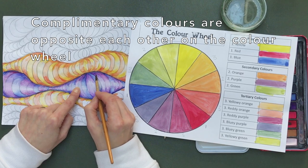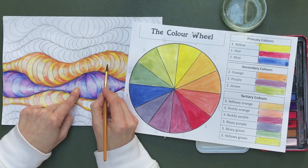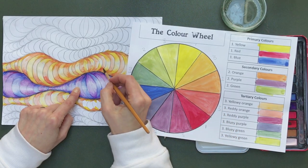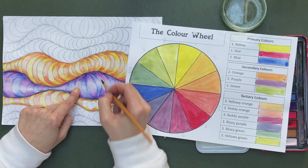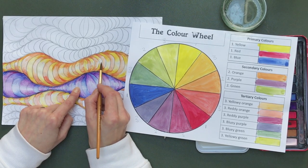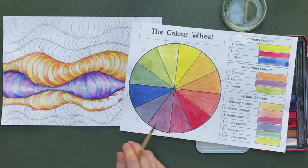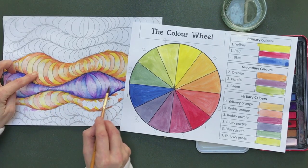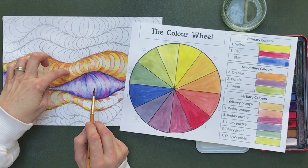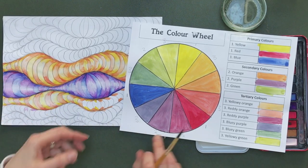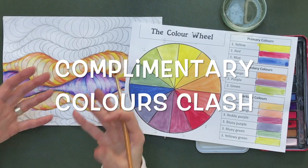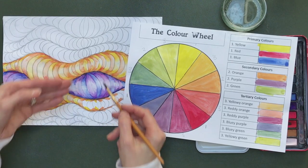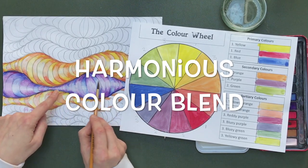So these stripes here are blue and then yellow — the complementary of yellow is purple. So I'm using yellow and purple over this side. So we've got blue and purple stripes and orange and yellow stripes. Just to reiterate, these are harmonious stripes, but these are complementary to those ones.